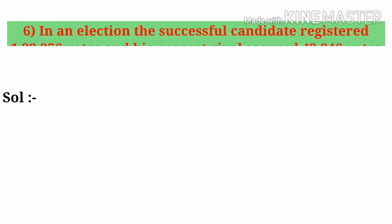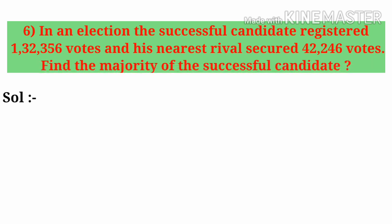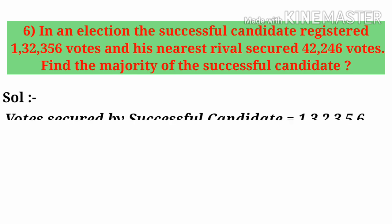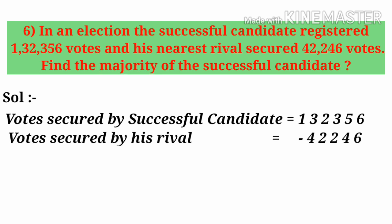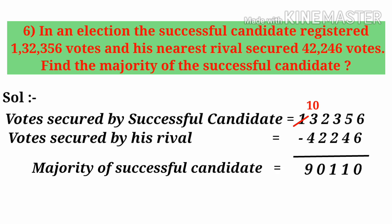Now, sixth problem. In an election, the successful candidate registered 1,32,356 votes and his nearest rival secured 42,246 votes. Find the majority of the successful candidate. Observe the word 'majority' in the problem, so let us think of doing subtraction. Votes secured by successful candidate: 1,32,356. Votes secured by his rival: 42,246. By subtraction, majority of the successful candidate is 90,110.